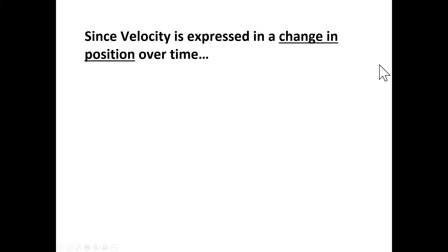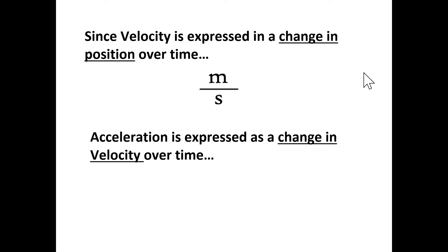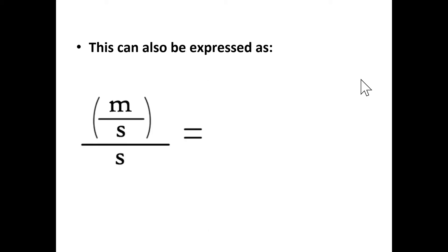Since velocity is expressed as a change in position over time, the SI units for velocity are meters per second. If you have a velocity of five meters per second, your position is changing by five meters every second that passes. Therefore, if acceleration is expressed as a change in velocity over time, the acceleration units would be meters per second divided by seconds. This is typically written as meters per second squared — that's the standard way to write it.